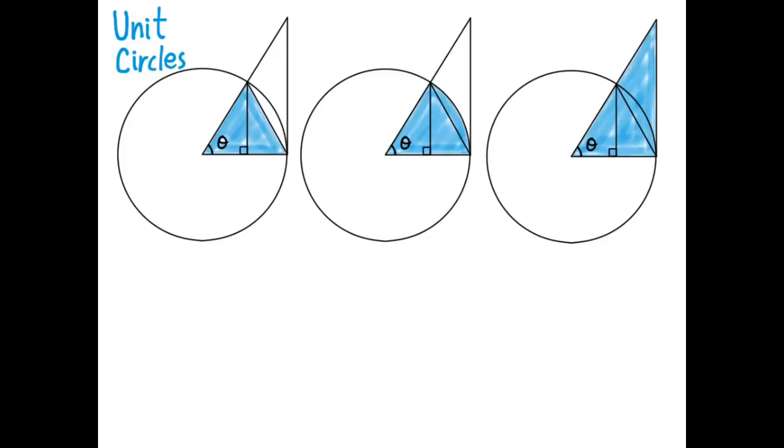All right, the first one has an area of one-half sine theta. You can get that because the altitude of this triangle is sine theta and the base is 1, and one-half base times height. The second area is one-half theta, that's the area of a sector: one-half theta r squared where r is equal to 1.